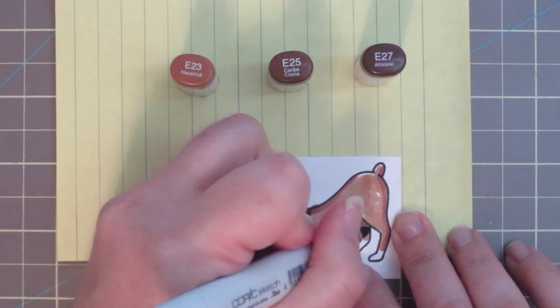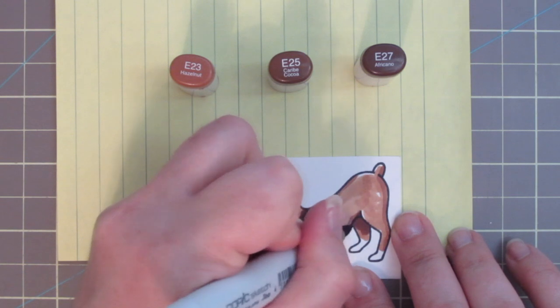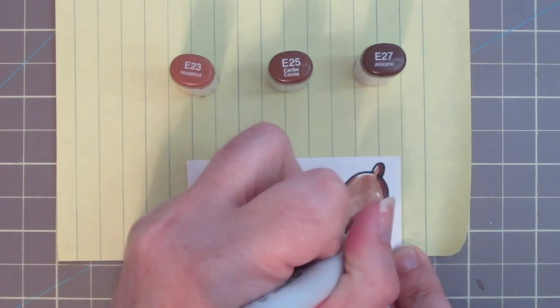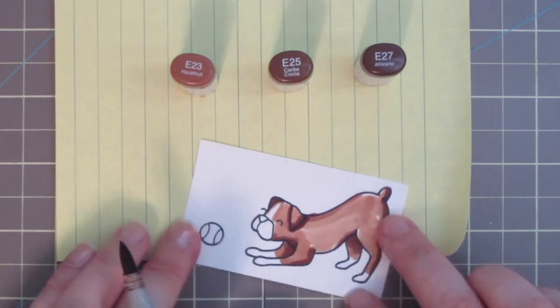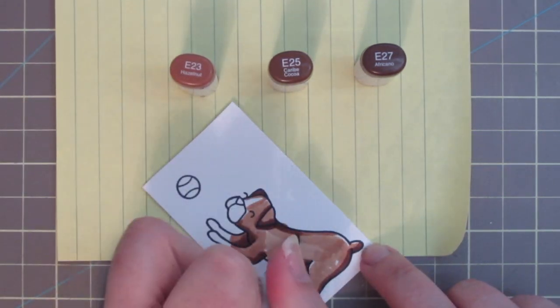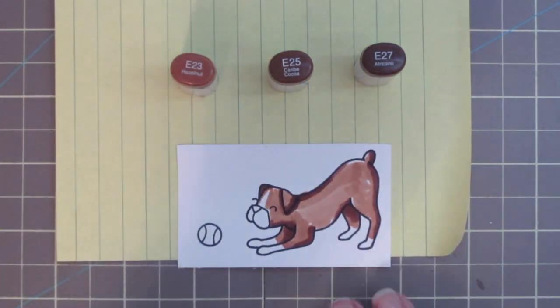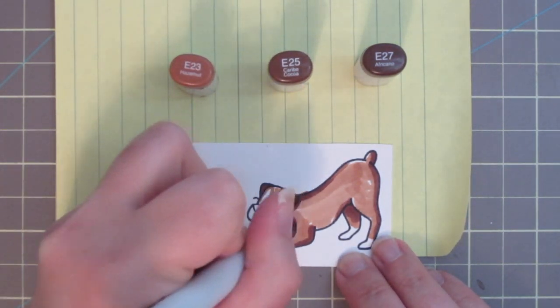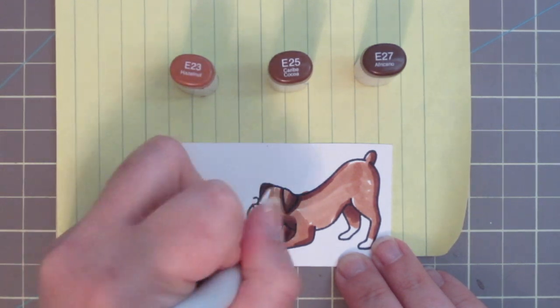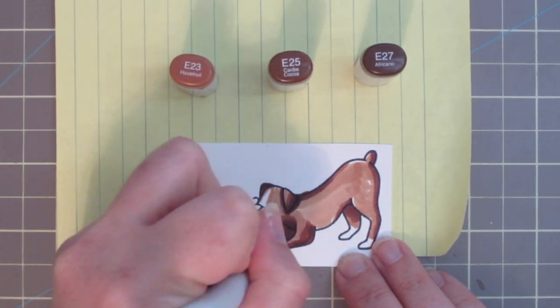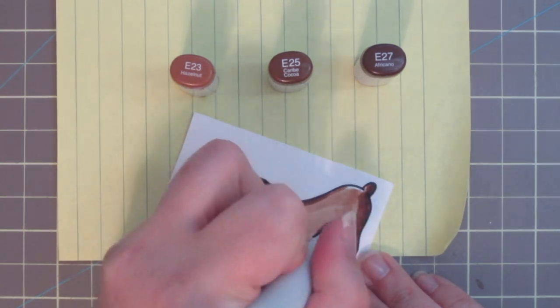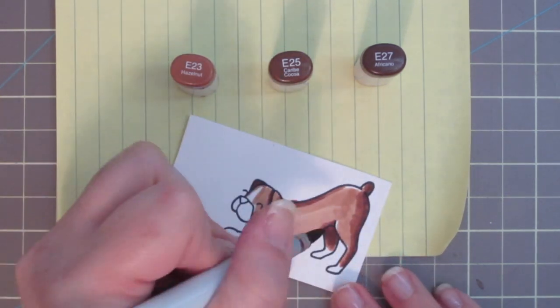And then once I'm happy with that I'm going to go in with my E27 and just really increase the depth so that I'll have a lot of dimension. So I'm just going right over top of the E25. Then I'm going to switch back to the E25 and kind of start to blend that in, just catching the edge of the E27 and drawing that color out a bit so that I'll have a nice and smooth transition when it's time to go ahead and blend everything back together.